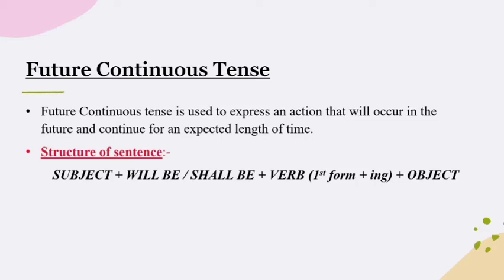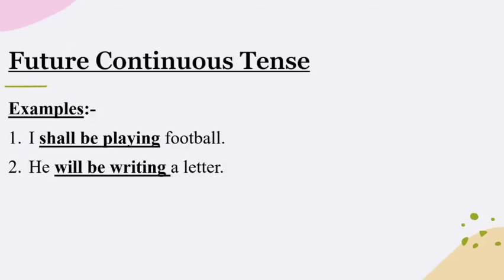The basic structure of a sentence in Future Continuous Tense is: Subject + will be or shall be + V1 + ing + Object. For example, in Example 1: 'I shall be playing football' — 'I' is the subject, followed by 'shall be', then the first form of the verb 'play' with 'ing' added to make 'playing', followed by the object 'football'.